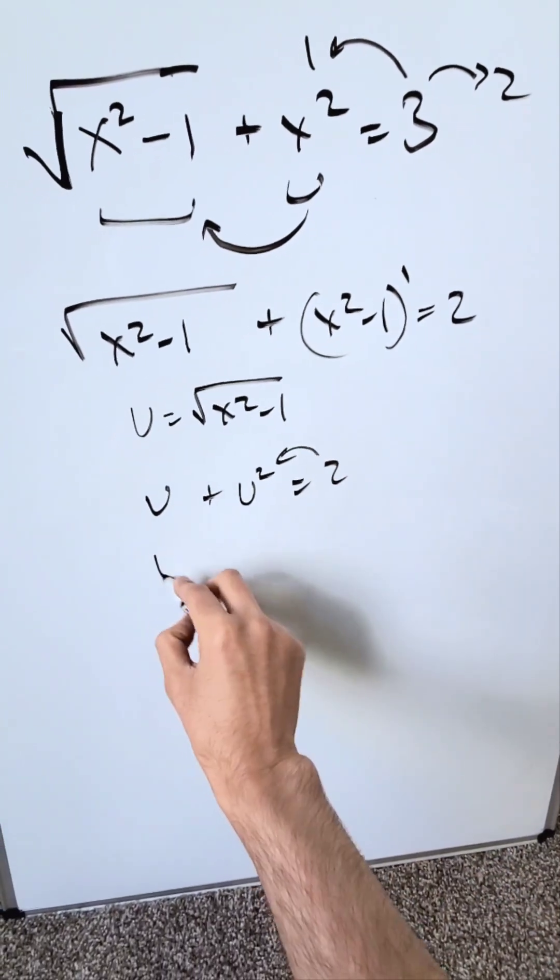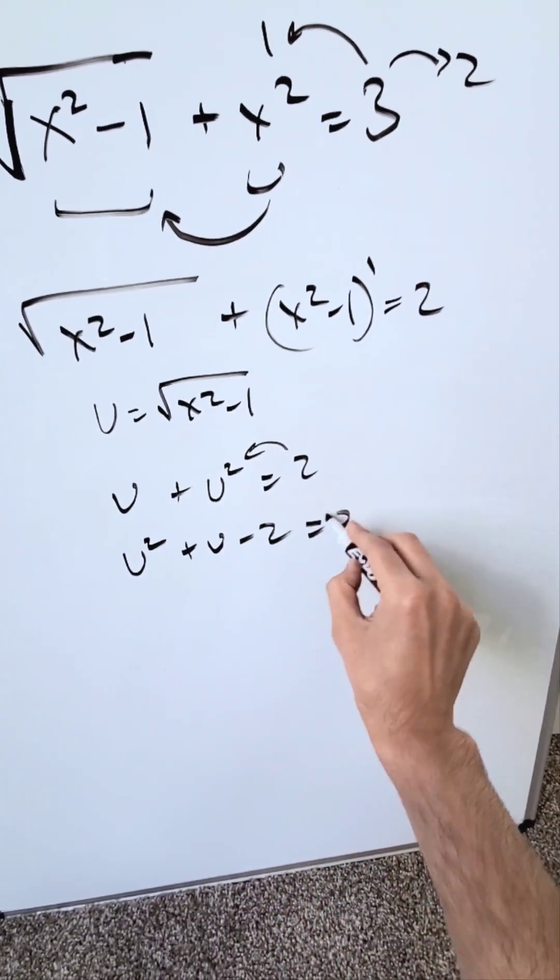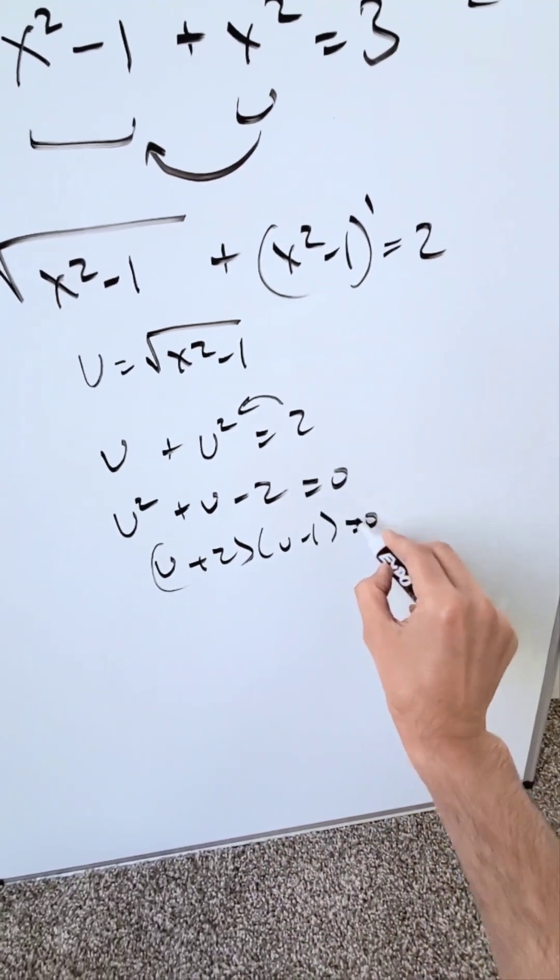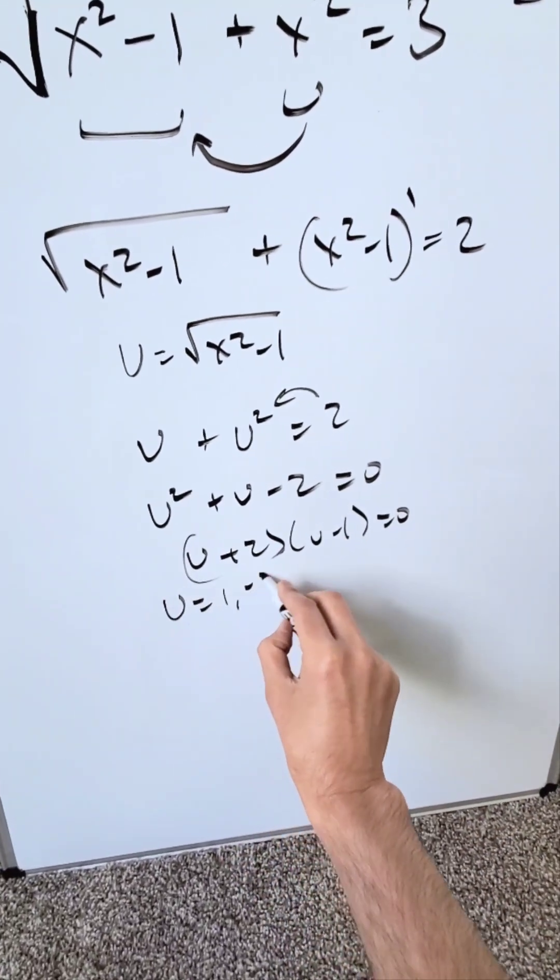Rearranging gives the quadratic equation u² + u - 2 = 0. Factoring: (u+2)(u-1) = 0. So u = 1 or u = -2.